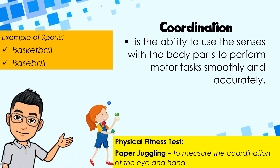Coordination is the ability to use the senses with the body parts to perform motor tasks smoothly and accurately. Examples of sports involved include basketball and baseball. For the physical fitness test, we will perform paper juggling, which measures eye-hand coordination.